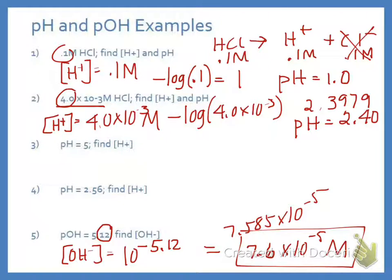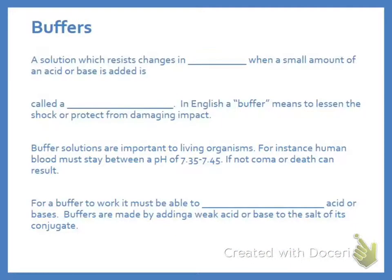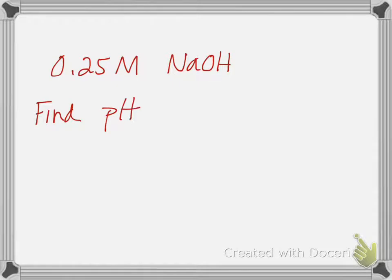Where we need to be careful is if we're finding a base and it asks us to find the pH. We're going to look at an example of that. Let's say I have 0.25 molar NaOH, and it says find pH and hydrogen concentration.